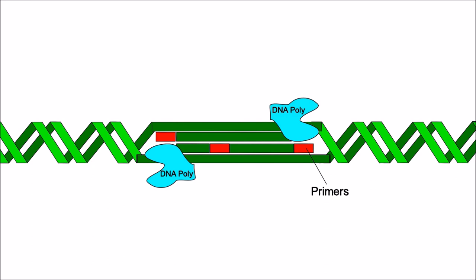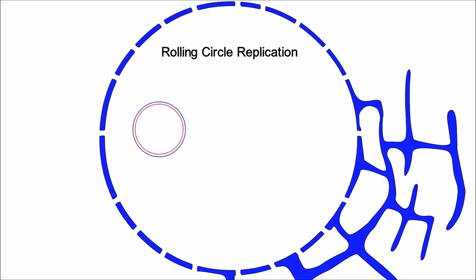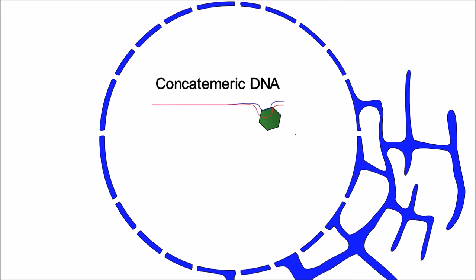The first type of replication is theta replication. Then replication switches to rolling circle replication. A long concatameric DNA strand is synthesized and then the genome is packed into a capsid.